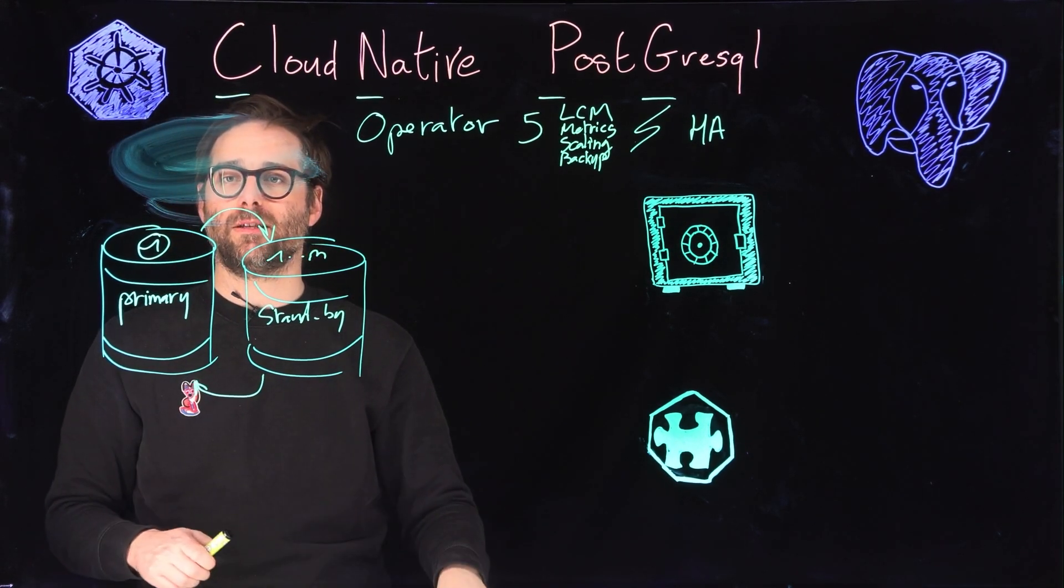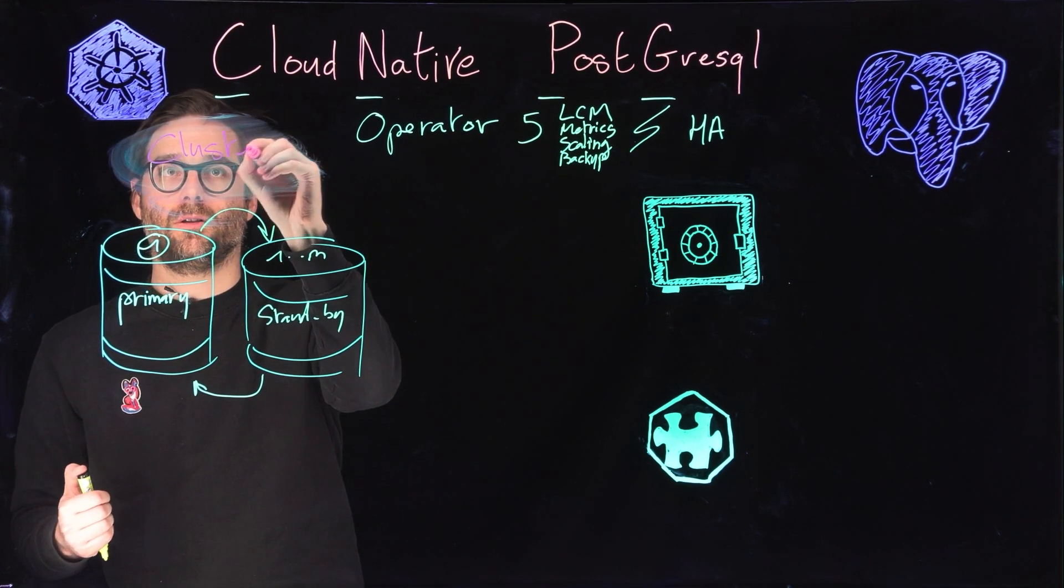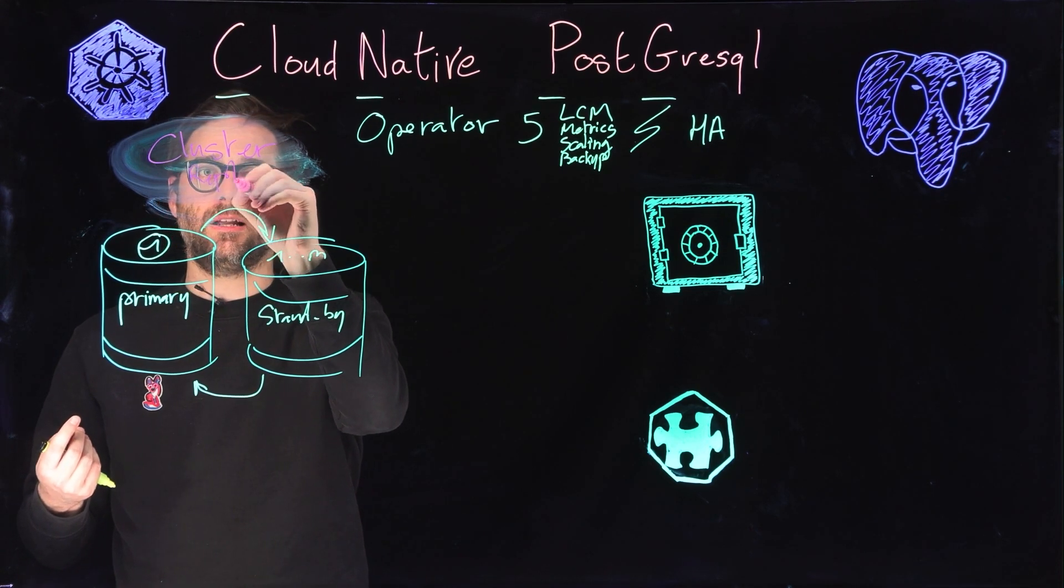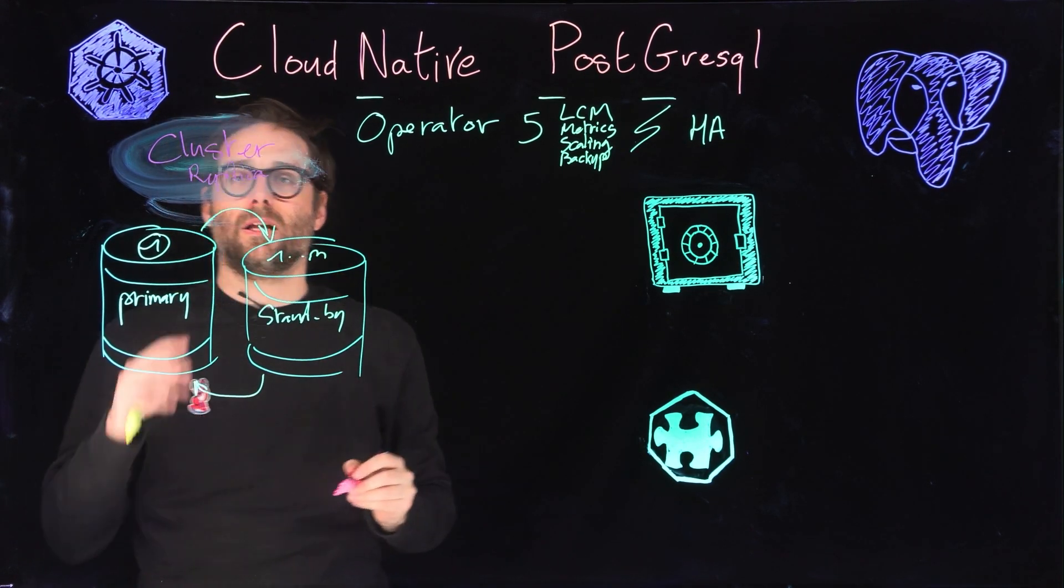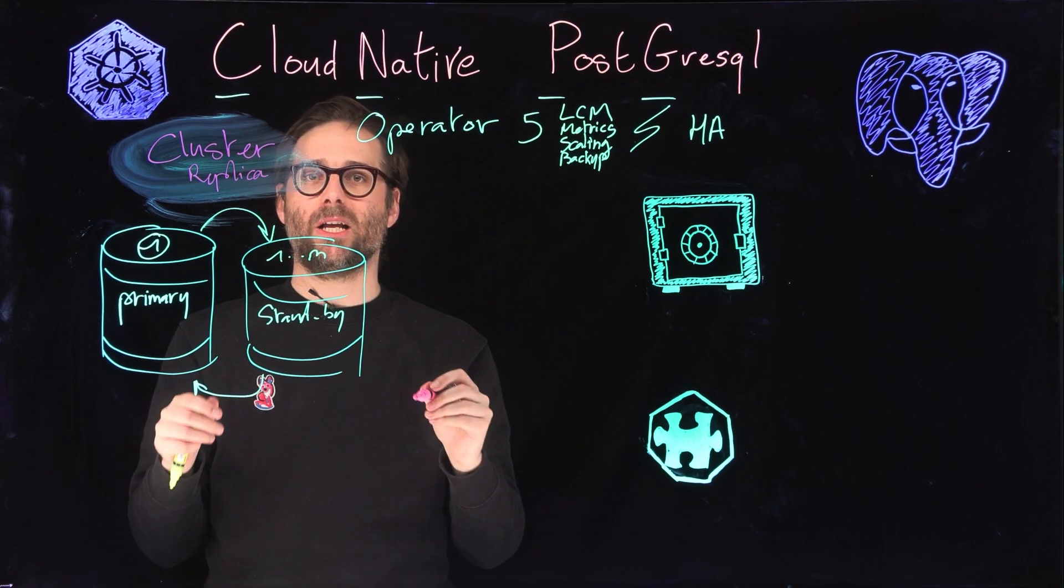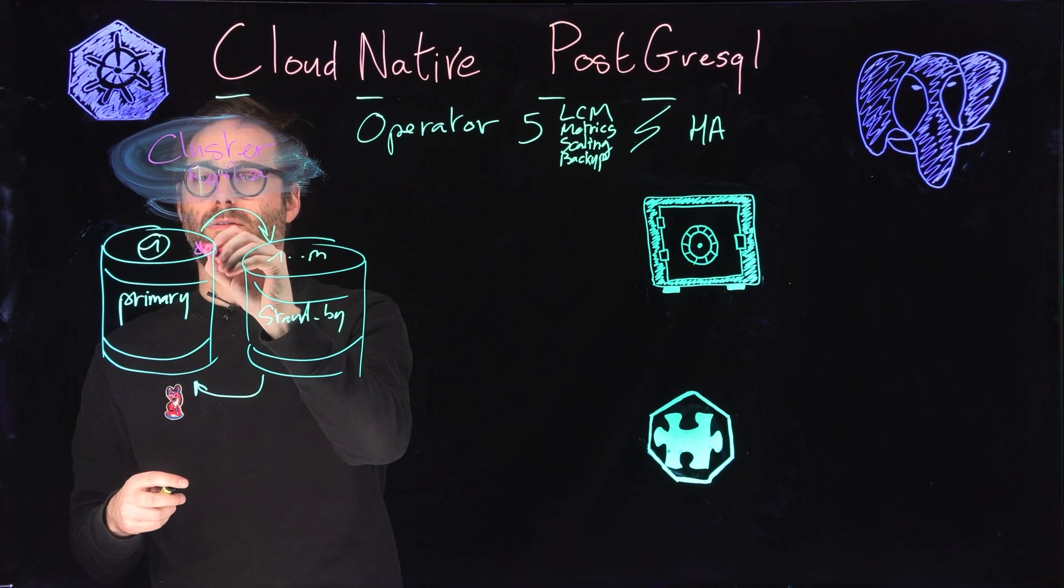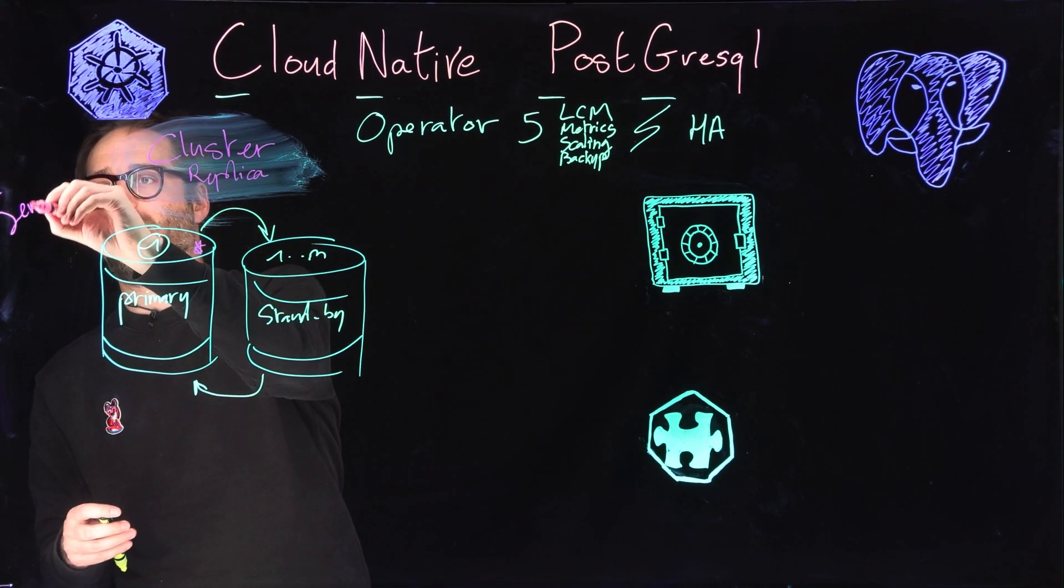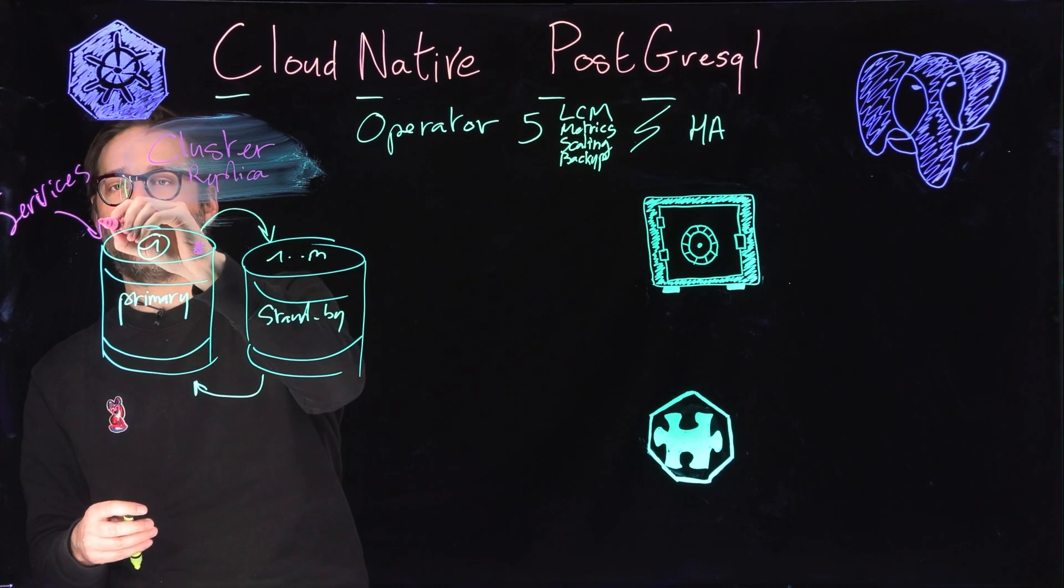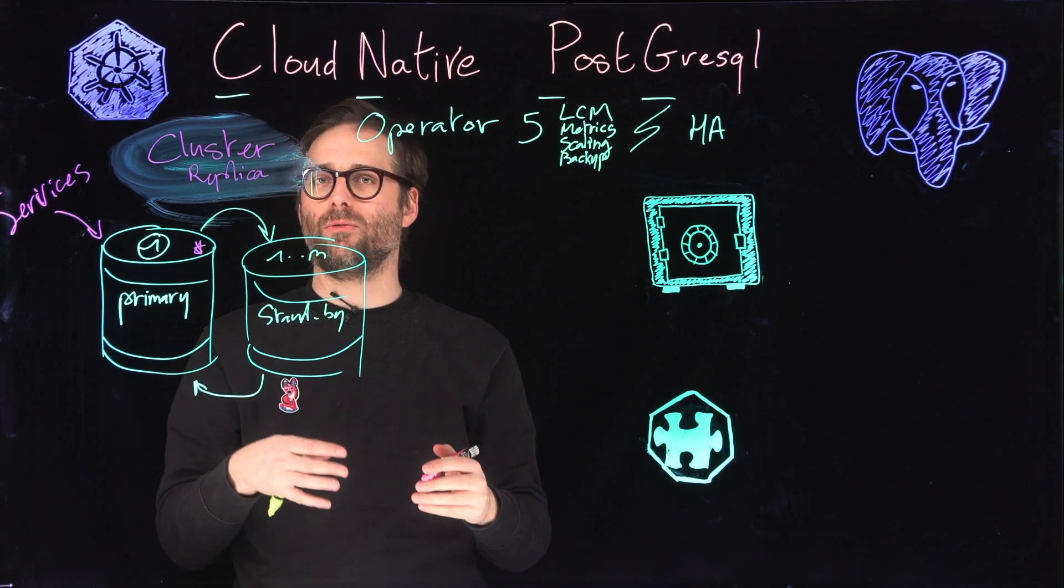They will be replaced by a custom resource named cluster. Within my cluster, I will define the number of replicas that are needed. This cluster custom resource is the one that's going to manage which pod is active as the primary and also manage the different services. We ensure that at any point in time, automatically, no matter the state, you always point to the active instance.